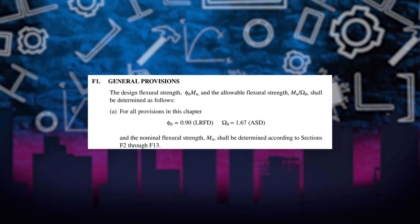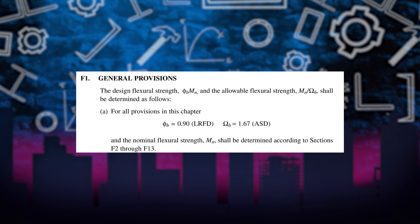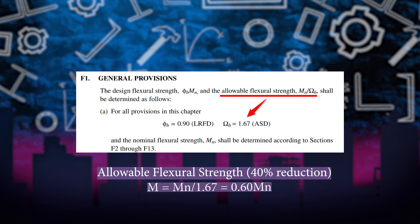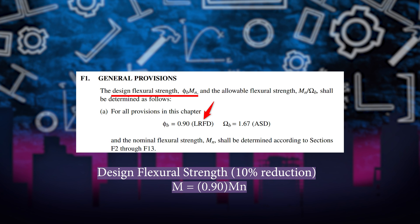Therefore, design standards direct us to reduce the nominal strength to an available strength using strength reduction factors, which depend on the design philosophy, the type of force being resisted, and other properties. For ASD, per AISC 360 Section F1, the allowable flexural strength is the nominal strength Mn divided by the factor Ω_b, which equals 1.67 — making the available strength approximately 40% smaller than the nominal strength. For LRFD, the design flexural strength is the nominal strength Mn multiplied by the factor φ_b, which equals 0.9 — making the available strength 10% smaller than the nominal strength.